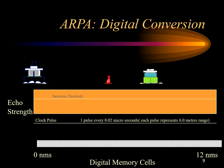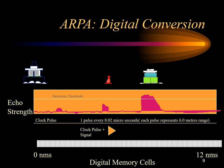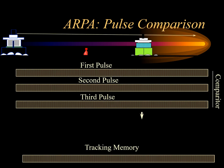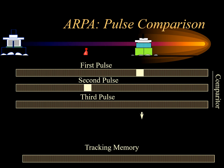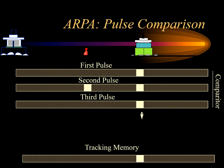Targets are detected automatically using correlation based on consecutive antenna rotations called scan-to-scan comparison. Typically, if a target appears in the same window of range-bearing cells for 5 out of 10 antenna rotations, a track is generated. After 15 rotations the track is confirmed and a target vector is generated. With an antenna rotation of 24 rpm, a scan is completed every 2.5 seconds, so it will take about 38 seconds to generate the confirmed vector.